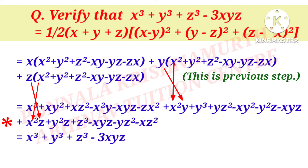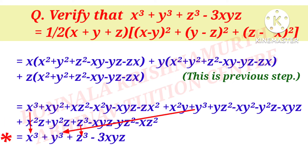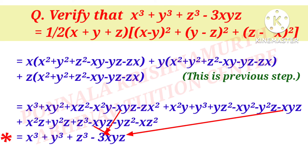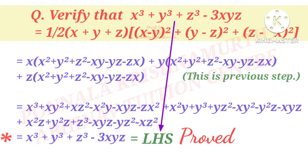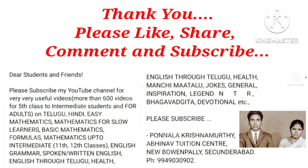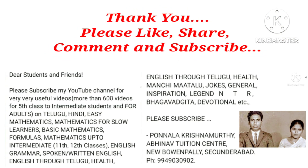Then z·x² = x²z, z·y² = y²z, z·z² = z³, z·(−xy) = −xyz, z·(−yz) = −yz², z·(−zx) = −xz². This equals x³ + y³ + z³ − 3xyz — the remaining terms cancel. Therefore this equals LHS. Proof complete. Thank you, please like, share, comment and subscribe to Pannala Krishnamurthy's YouTube channel.